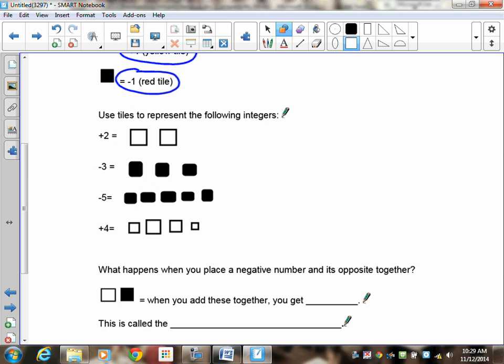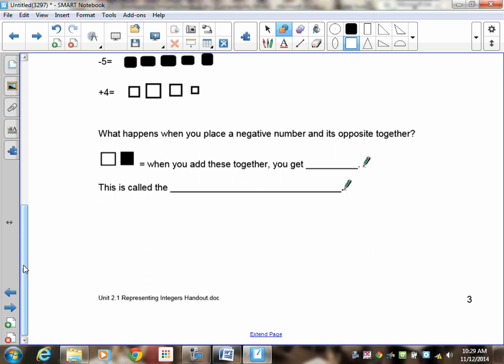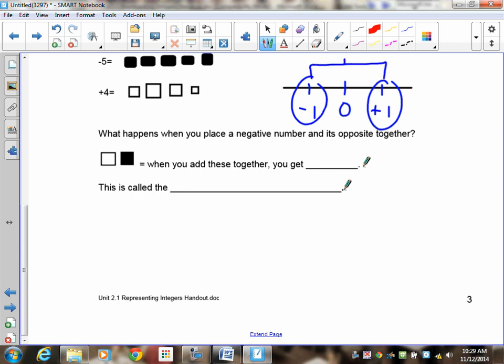Okay, so the next step is called the zero principle. And that's a clue to the question that I'm going to ask you. What happens when you place a negative number and its opposite together? Now if you think of the number line, we have zero in the middle. We have positive one here. We have negative one there. When you put this and this together, and they average out, guess where you end up? Zero. So when you take and put a positive tile and a negative tile together, and you group them, they're going to give you a zero. Now, believe it or not, this is called the zero principle.